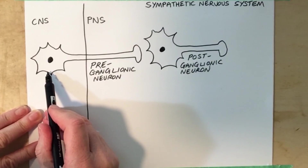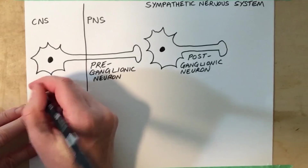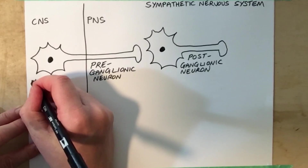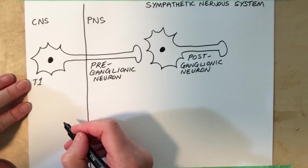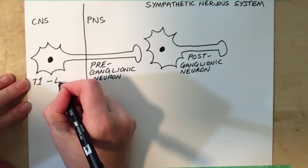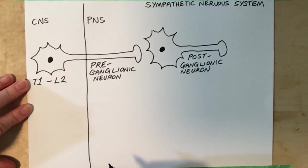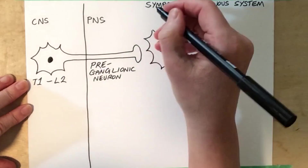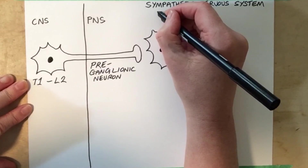The preganglionic neuron cell bodies are located within the CNS, more specifically in the spinal cord between T1, thoracic region number one, through lumbar region number two. The system can also be referred to as the thoracolumbar division.